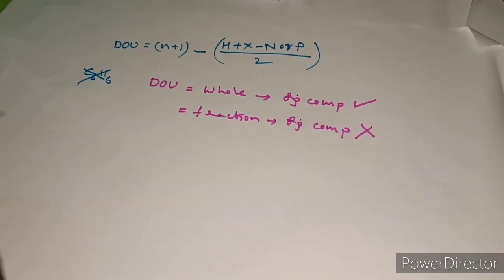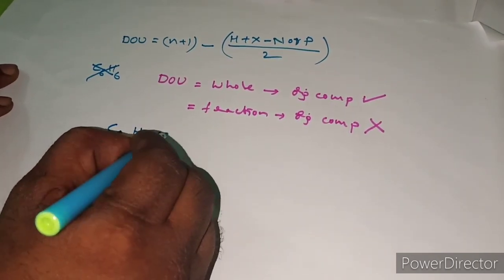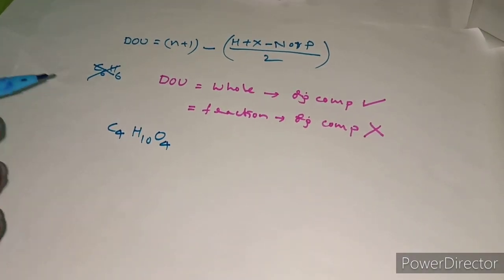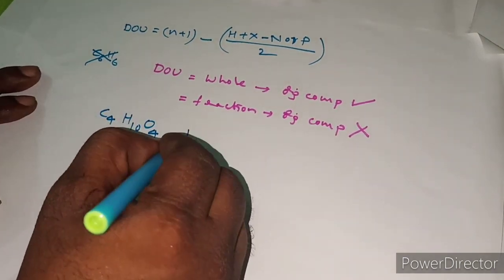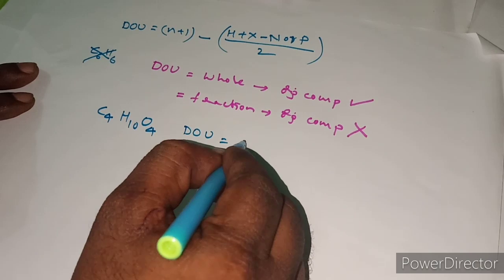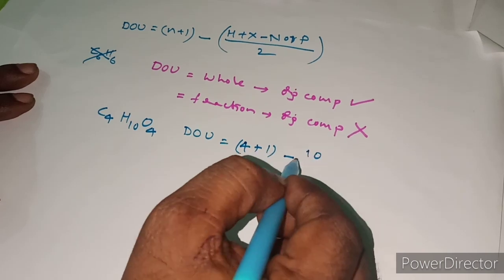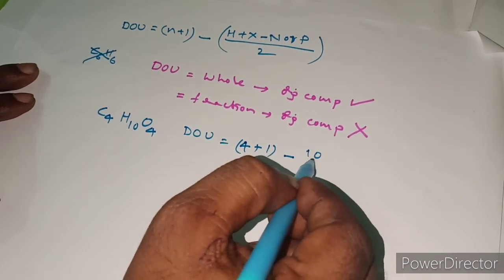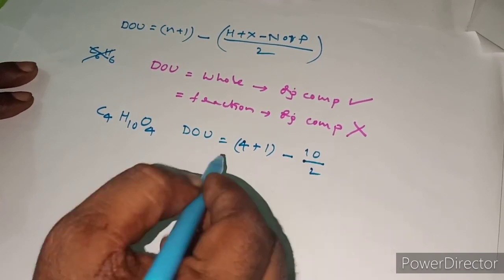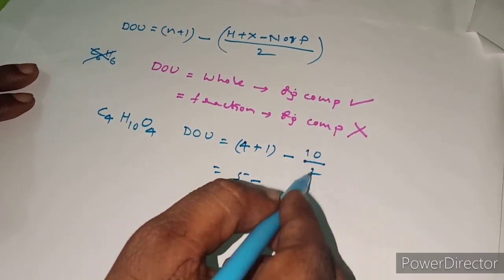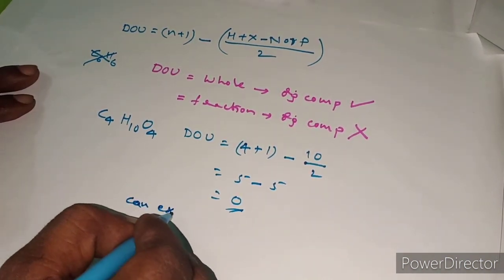For example, take the molecule C4H10O4. Let us calculate the degree of unsaturation. DOU = (4 + 1) − (10 + 0 − 0) / 2 = 5 − 5 = 0. Since oxygen does not affect DOU, we ignore it. The result is 0, which is a whole number, so this molecule can exist.